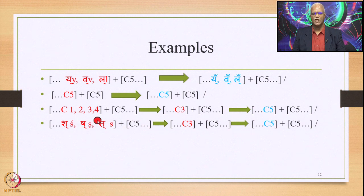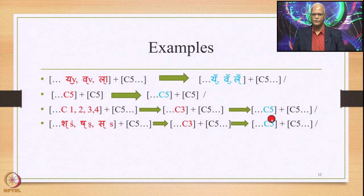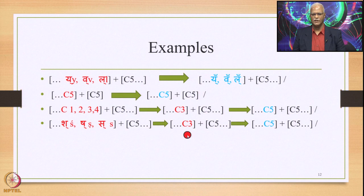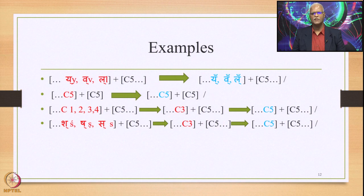C1234 first get substituted by C3 by application of Jhalam Jashonte, then this C3 gets substituted by C5, and the output is C5 plus C5. Similarly for Sh, Sh, and Sir plus C5: these will first be substituted by the respective column 3 consonants, and then this column 3 consonant will be substituted by C5. So C5 plus C5 will be the final output, and all these outputs are optional.